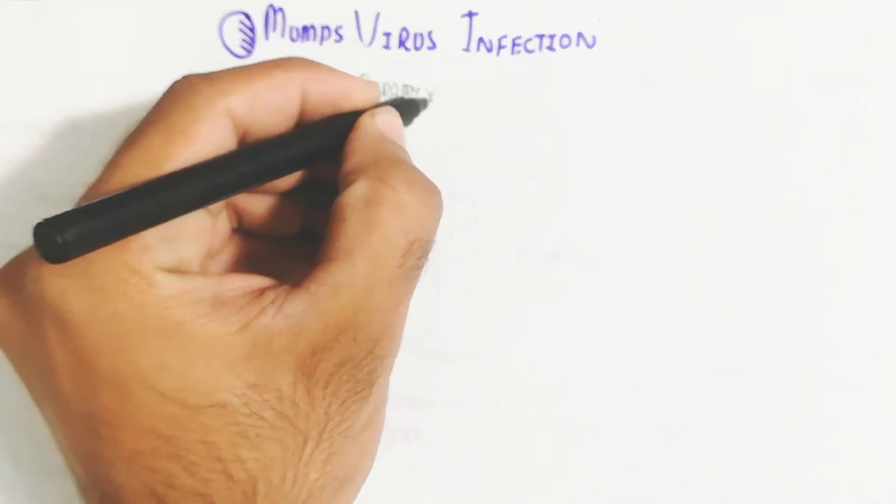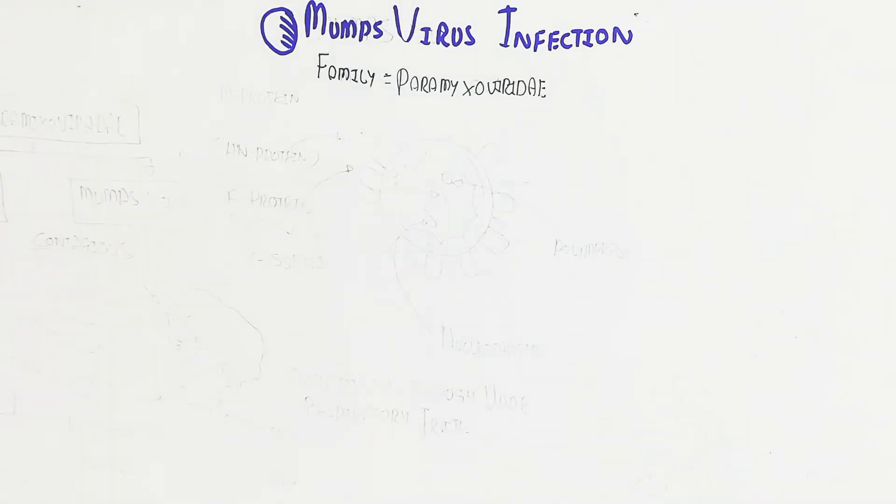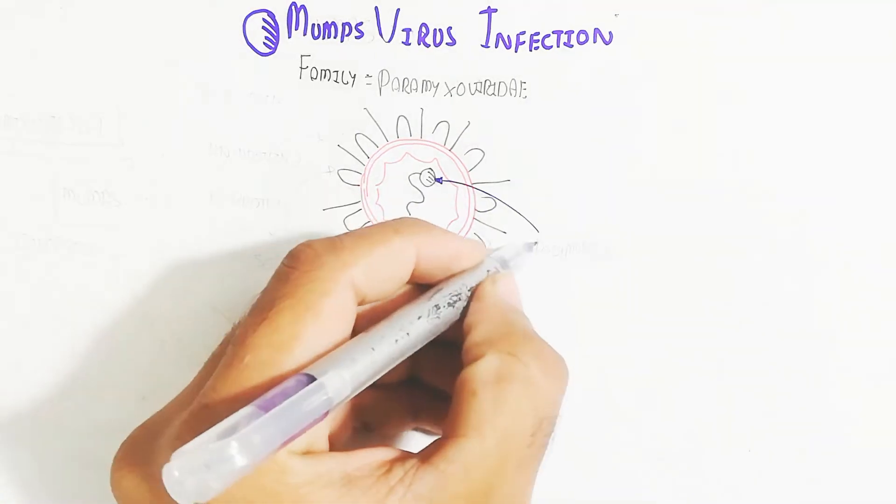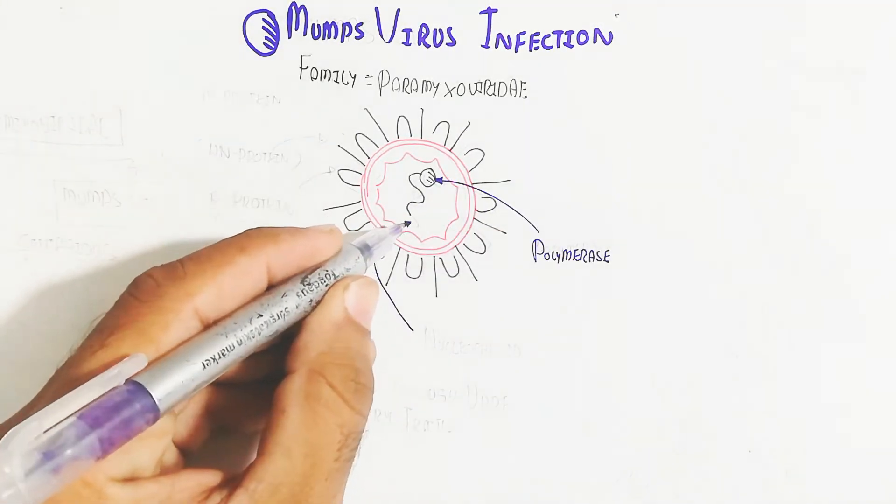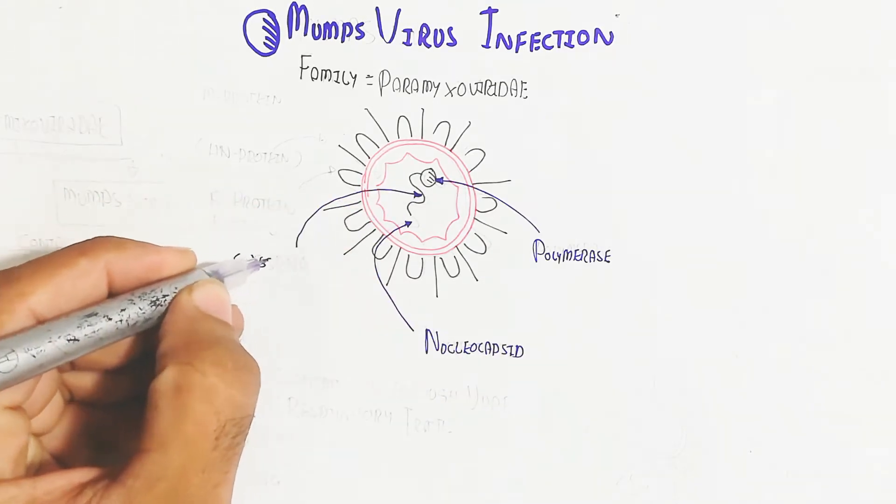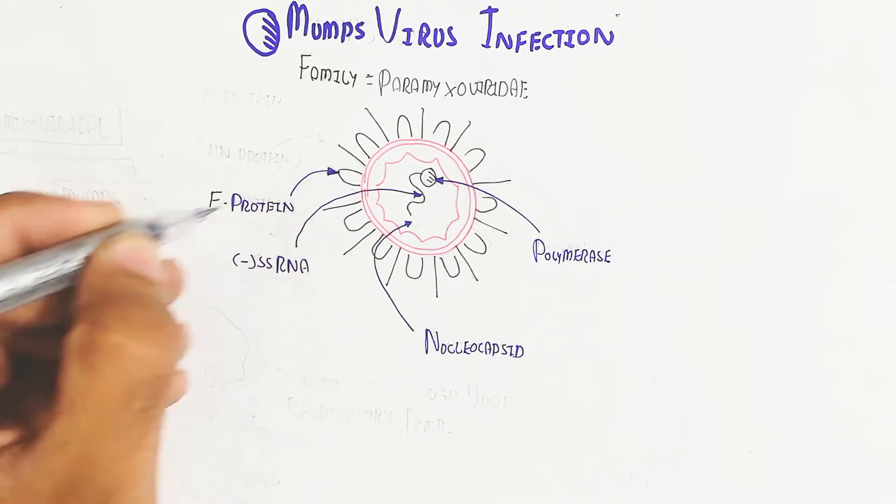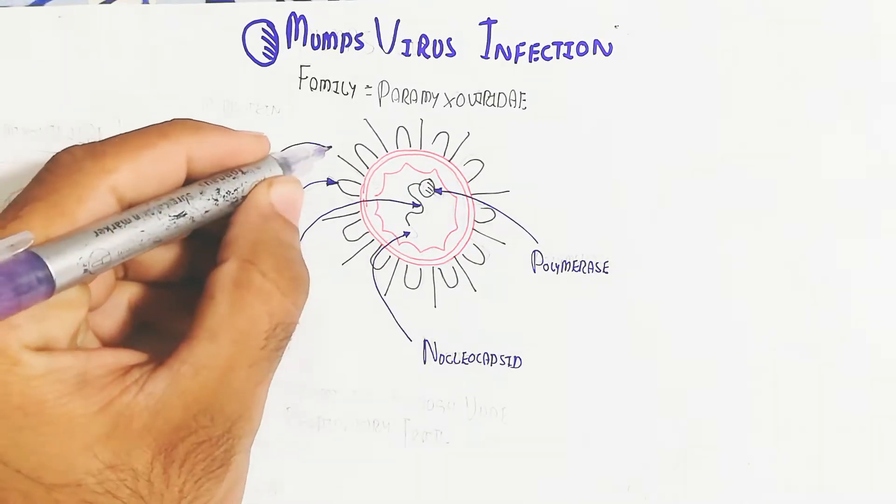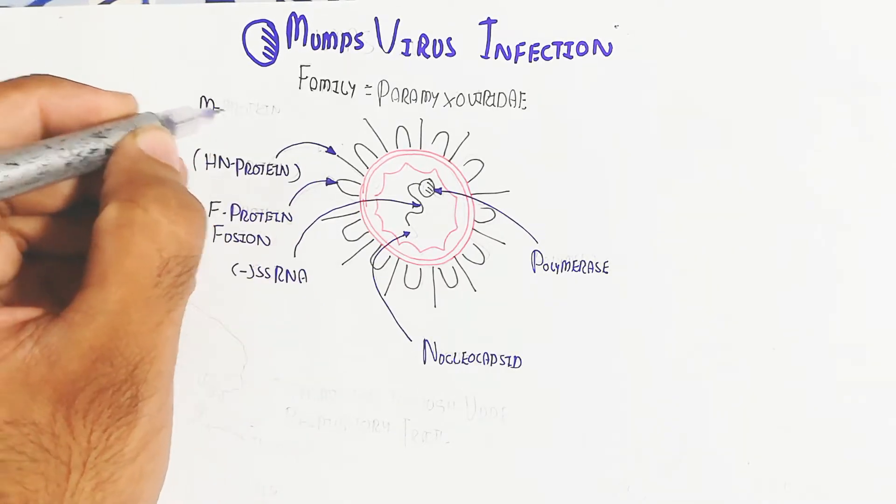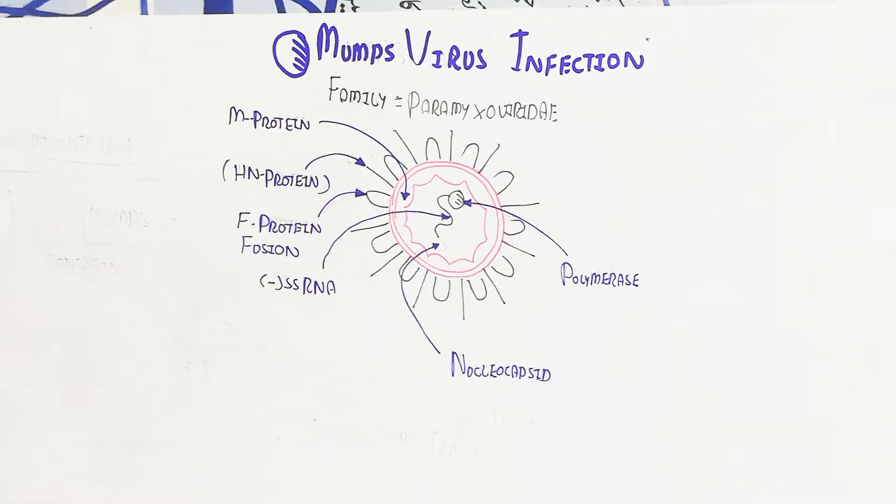This contains a spike protein like other viruses. This virus contains an RNA virus, single-stranded RNA, the negative sense strand. The nucleocapsid is surrounded by RNA. The polymerase is attached for the enzyme, for polymerization to produce the positive RNA strand when infected. This is the M protein, the HN protein, and the fusion protein.